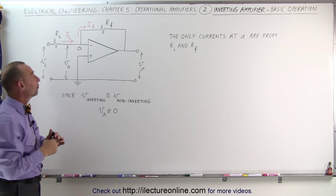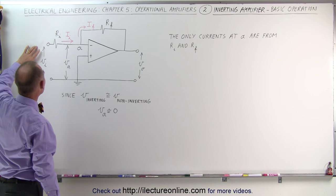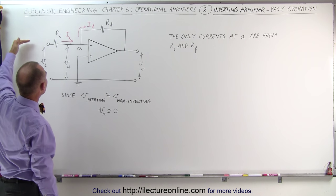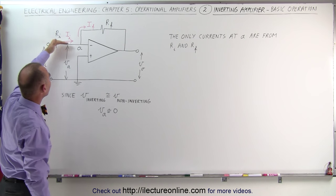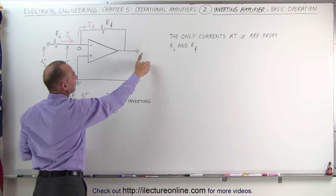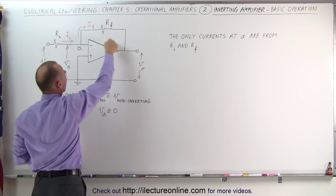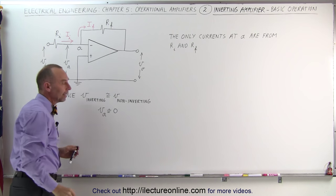Let's assume for a moment that this is a positive input voltage, that the current is flowing in this direction, and that this is a negative output voltage, so the current through R sub F will go in that direction as well.